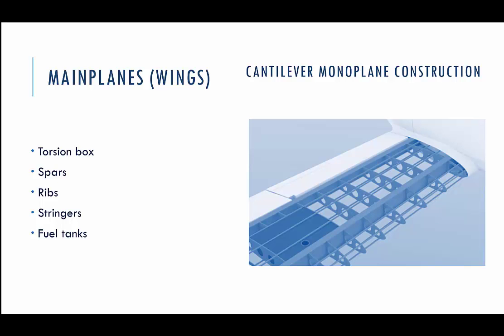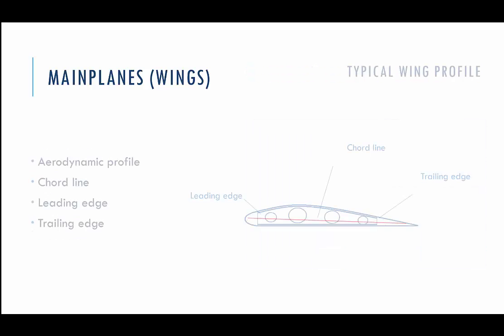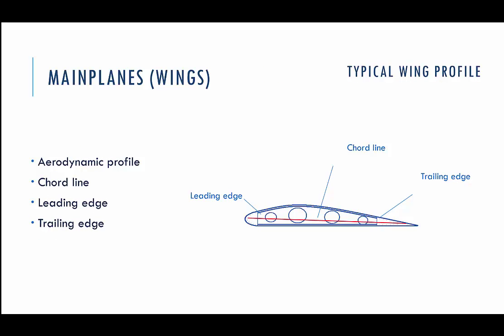Skin can be stressed or not stressed, as on old airplanes. Wings are usually made of aluminum alloys. Usually in the wing roots — the parts of the wing close to the fuselage — fuel tanks are placed inside the torsion boxes. This is a wing profile; we will discuss aerodynamic processes later.